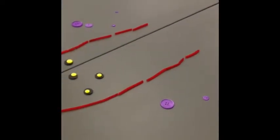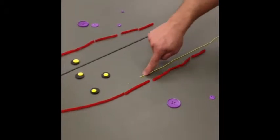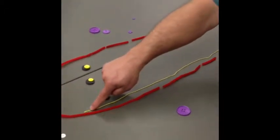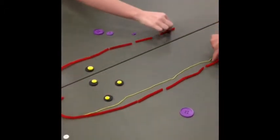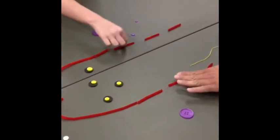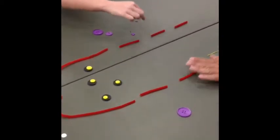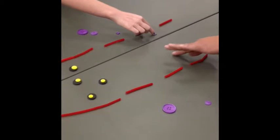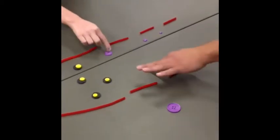Action potential, represented by the yellow yarn, travels down the axon, represented by the red pipe cleaner, while opening calcium channels of the nerve cells. The open channels allow calcium, represented by the purple buttons, to flow inside the axon.